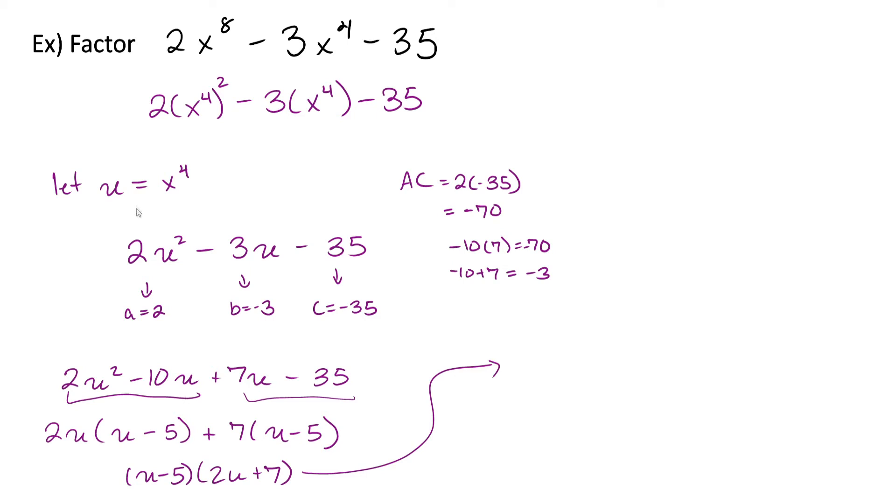Now we factored but we haven't finished factoring yet. We need to rewrite our original expression back in here. So before we're finished we have to replace u with x to the fourth again. So we have x to the fourth minus 5 times 2x to the fourth plus 7. And thankfully this cannot be factored further so we would stop here.